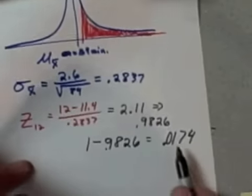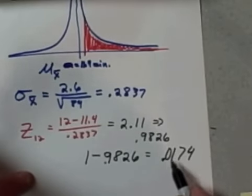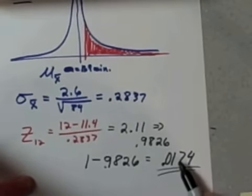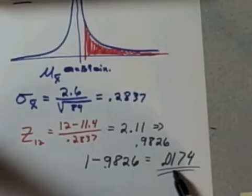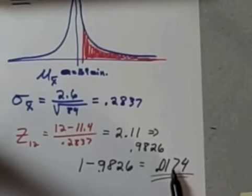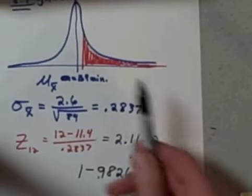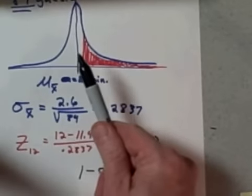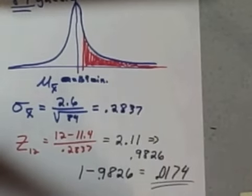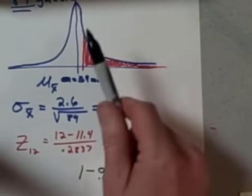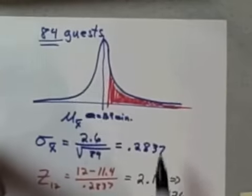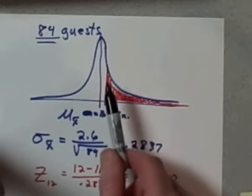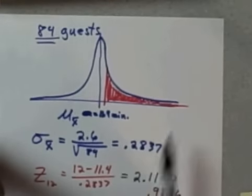So that is 0.0174, or somewhat less than 2% chance. Two percent chance of what? We've got less than a 2% chance that we will run out of water. Another way of saying it is there is less than a 2% chance that on average the 84 guests will take a shower that lasts 12 minutes or longer.